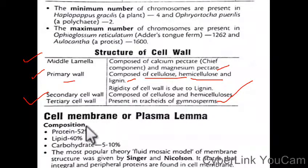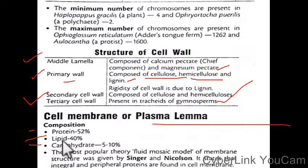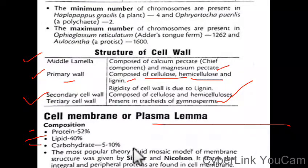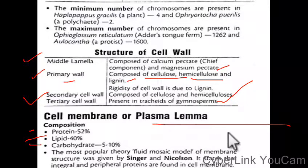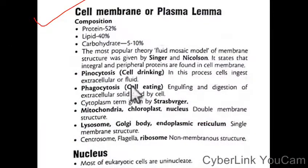The cell membrane, or plasmalemma, is composed of protein (52%) and lipid (40%). The most popular theory, the fluid mosaic model of membrane structure, was given by Singer and Nicholson. It states that integral and peripheral proteins are found in the cell membrane.